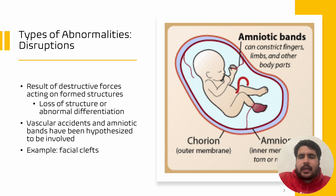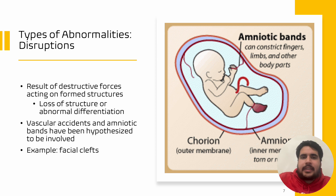The last type of abnormality are called disruptions. Disruptions are a result of destructive forces acting on already formed structures or organs. Essentially, disruptions lead to the loss of a structure or cause abnormal differentiation or damage. Vascular accidents and amniotic bands have been hypothesized to be involved in disruptions. For example, we can see from the diagram that when the amniotic fluid is damaged, thin bands are formed and these bands can wrap around the developing embryo or fetus and, for example, damage a structure or restrict blood flow. A common example of disruptions can include facial clefts.